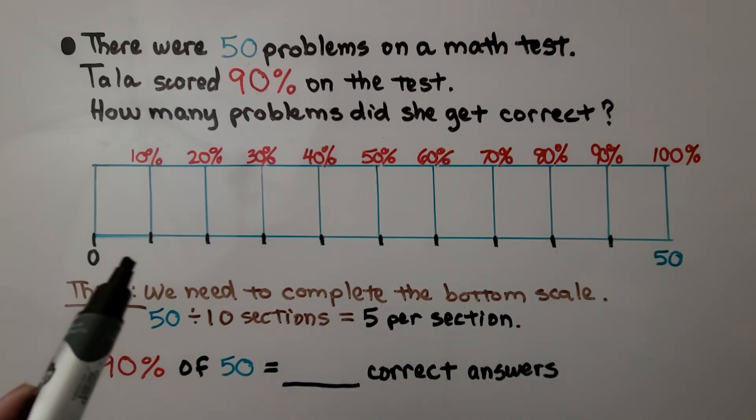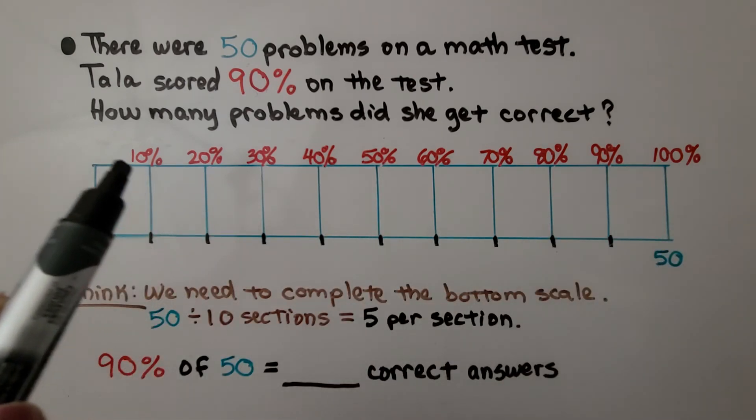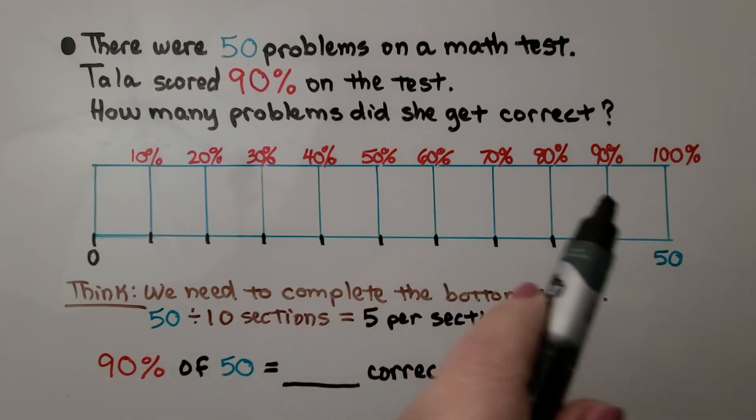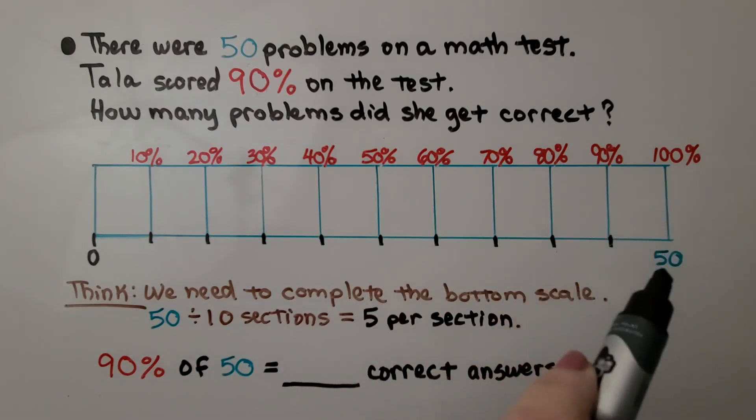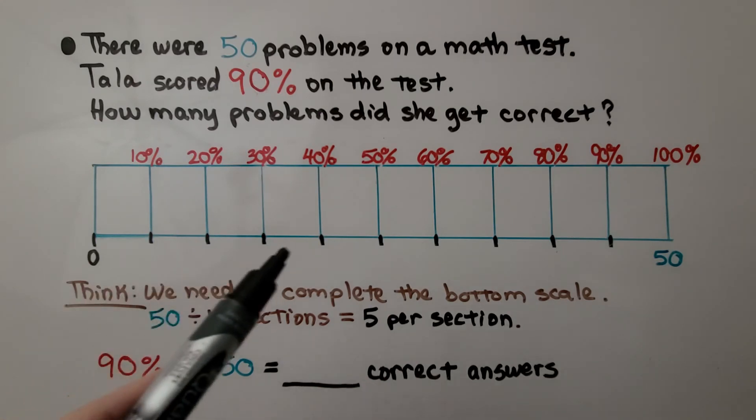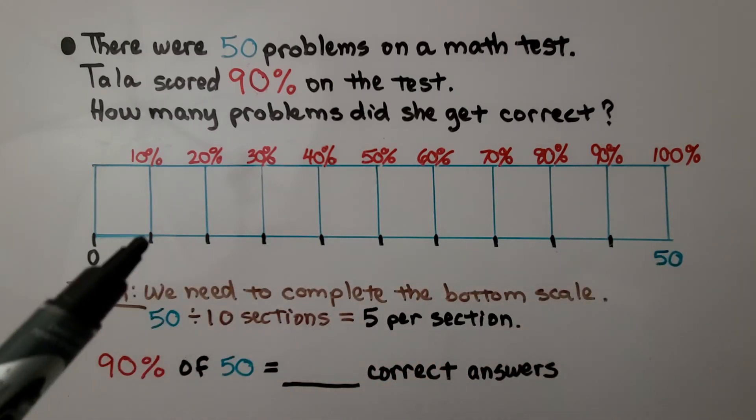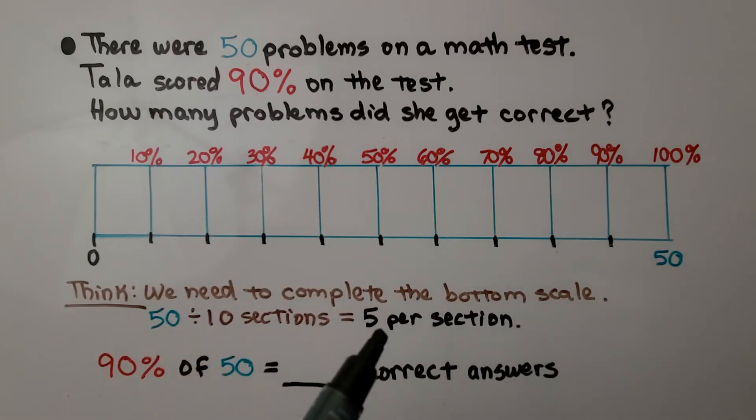We make a big rectangle, and we split it into 10% increments to show 100%. There were 50 questions on the test, so our bottom scale is going to go up to 50, and we need to complete the bottom scale. We have 50 split into 10 sections. That's going to be 5 per section. We're going to skip count by 5s for the bottom scale.